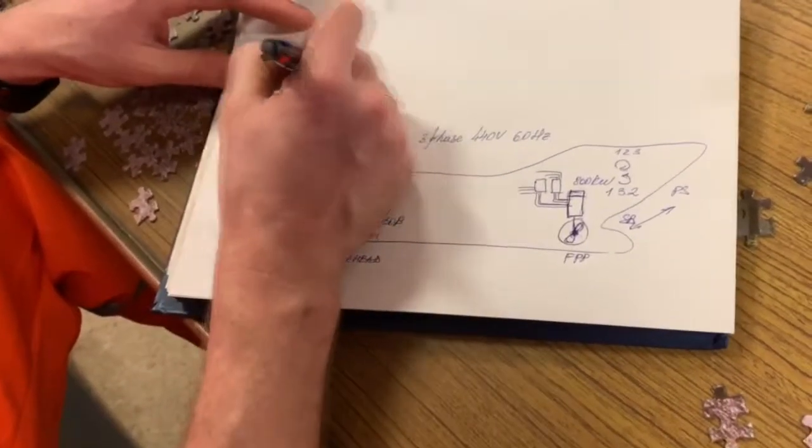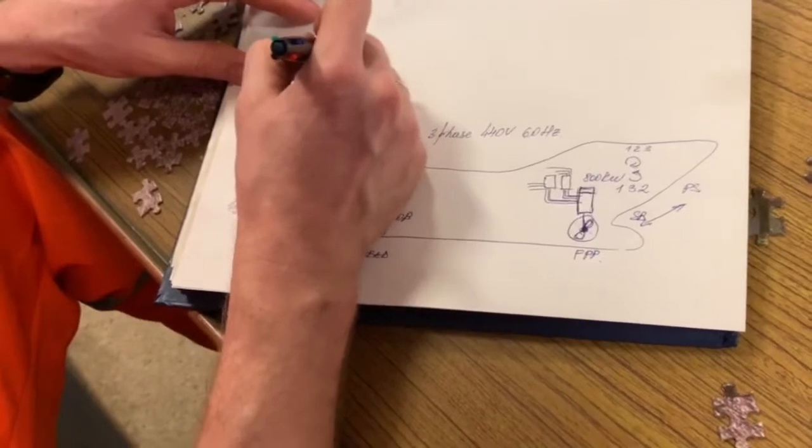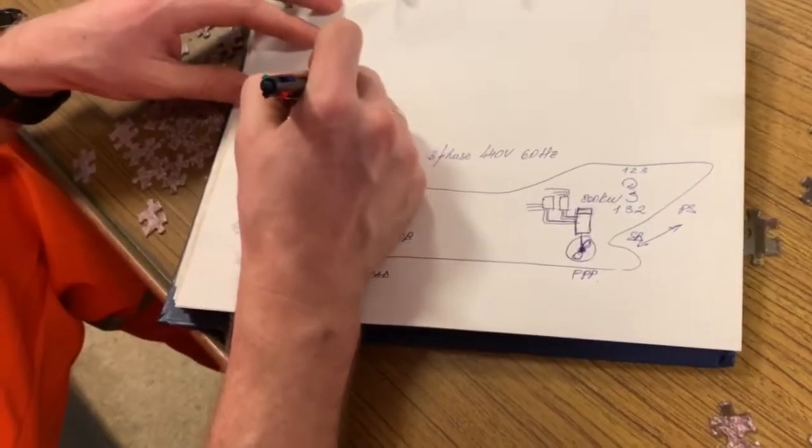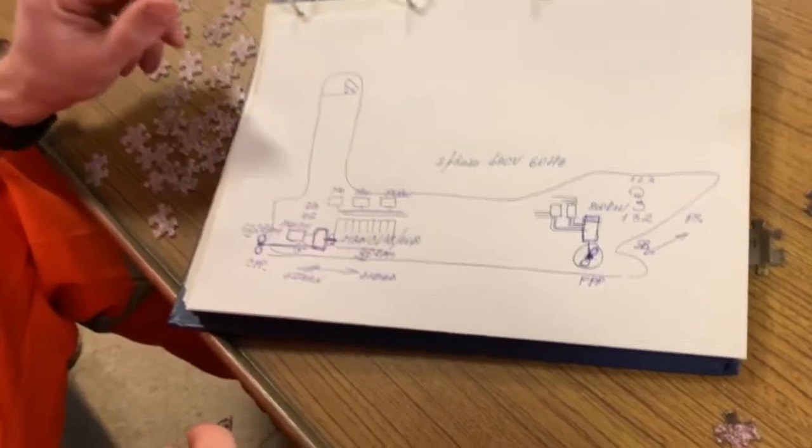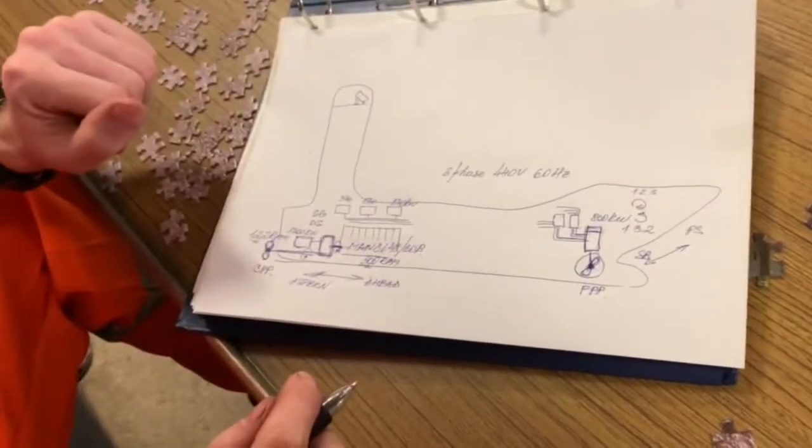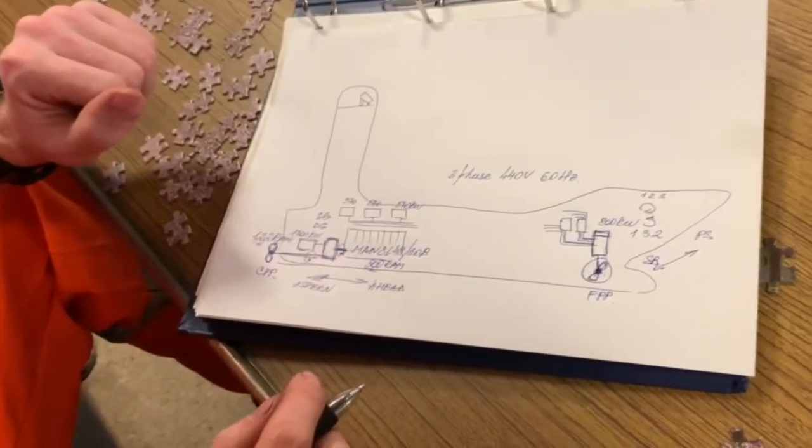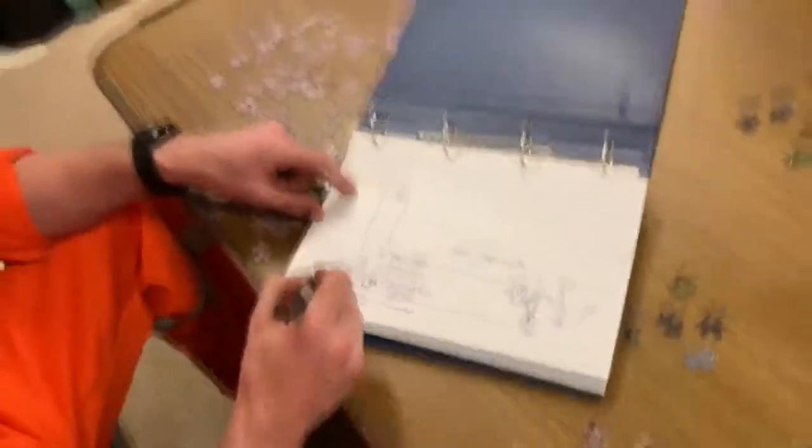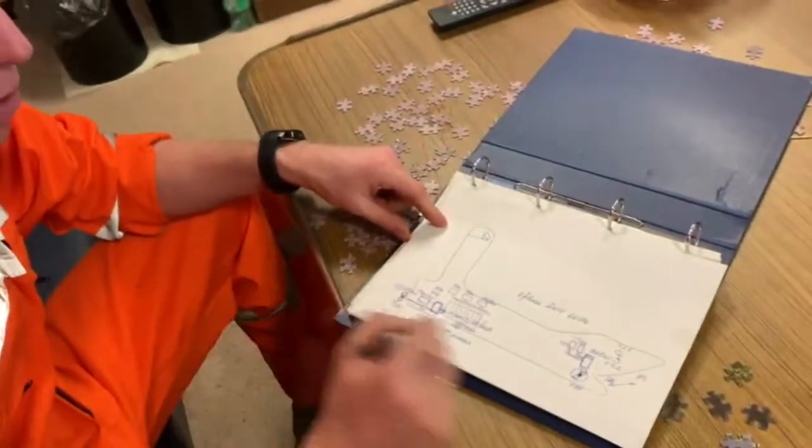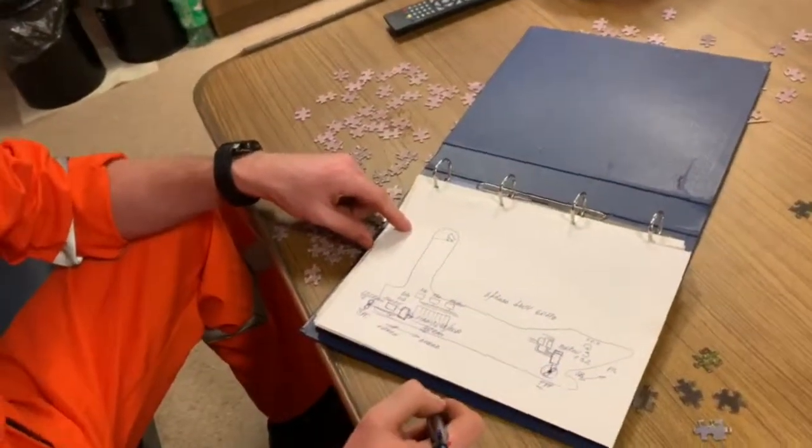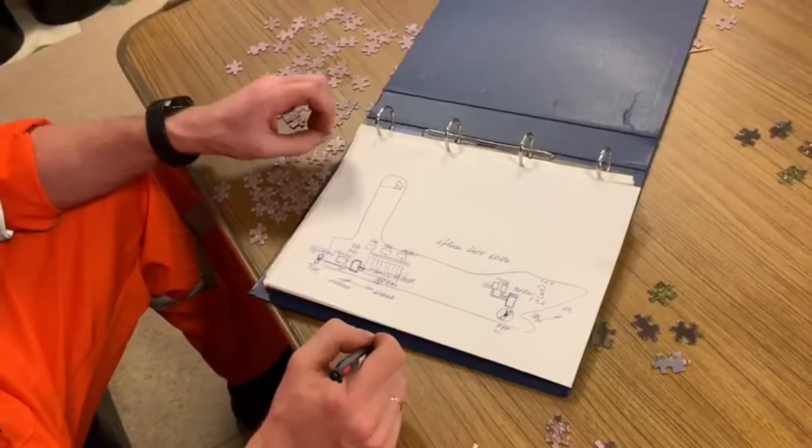And of course, all the commands are going from the bridge console. So this is a small overview of the power system and operation of the CPP and FPP, bow thruster and main engine propellers.